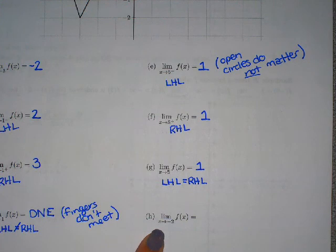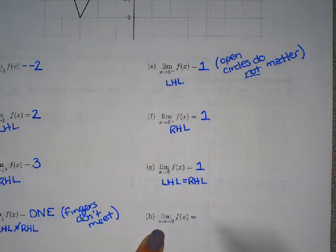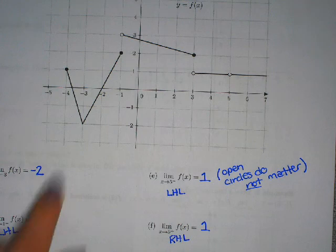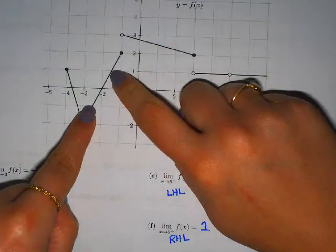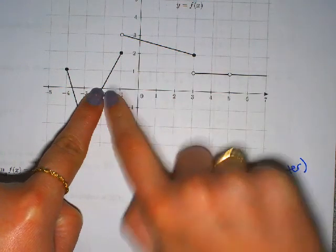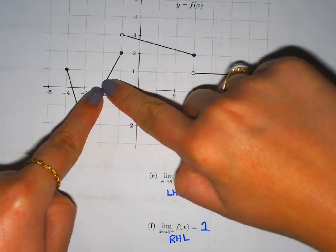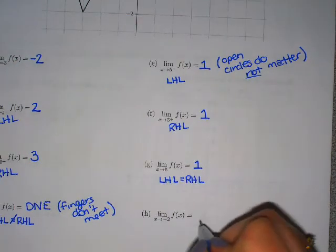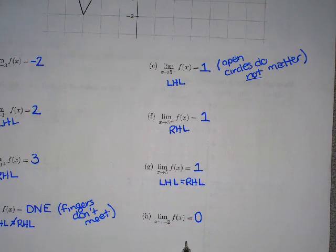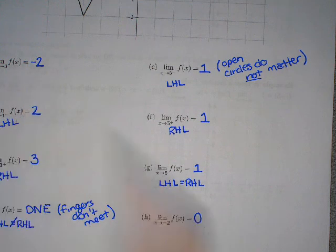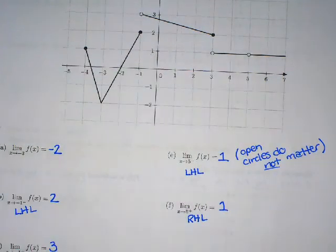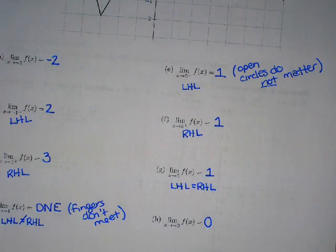Our last one is the limit as x approaches negative 2 — a two-sided limit, no plus or minus. I come in from the left of negative 2 and get 0 in the y value. From the right of negative 2, following in, I also get 0. My fingers meet and the answer is 0. I included this one on purpose because students sometimes don't believe the answer can be zero — but the answer can be positive, negative, zero, or DNE. So it is possible to get an answer of zero.